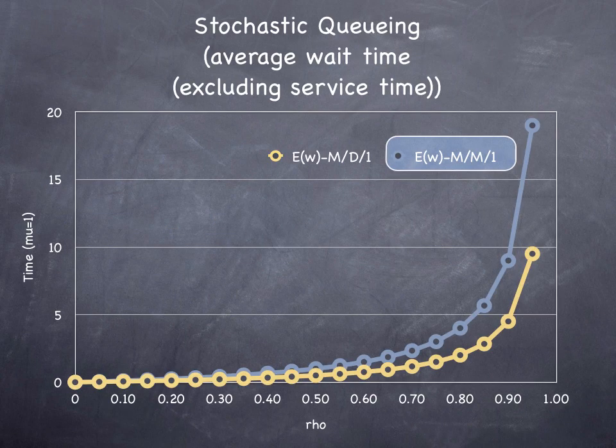How does this work? If we're looking at the average wait time, which excludes the service time, we can look at how much delay there is in an M/D/1 process and an M/M/1 process. The M/M/1 is in blue, the M/D/1 is in yellow. Which one has more delay? The blue line, the M/M/1.